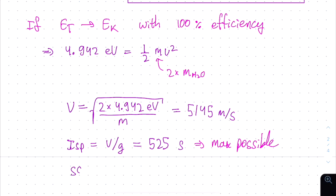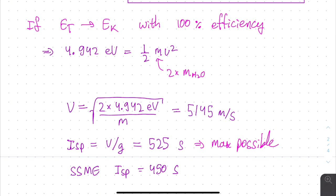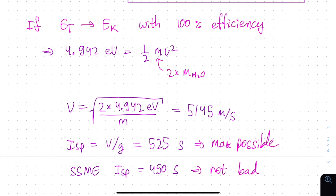Now let's compare our maximum theoretical estimate to a real rocket engine. The space shuttle main engine produced a specific impulse of 450 seconds, which is really not bad, especially considering that the space shuttle main engine needed to operate all the way from Florida, which is at sea level, to the vacuum of space.